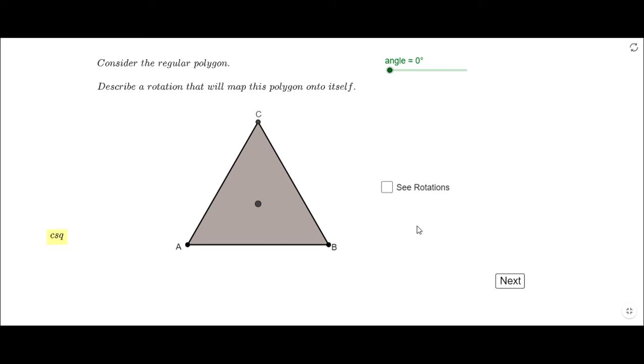Welcome or welcome back to C Square. In this video clip we're going to rotate some polygons around their centers and we're going to try to find the angle or the angles for which those polygons map onto themselves.